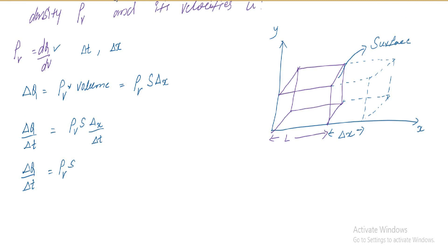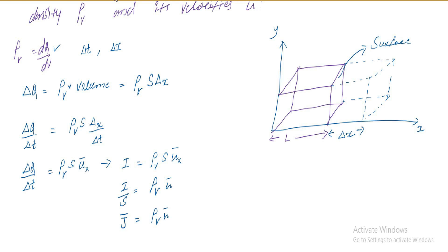Distance by time is velocity, so delta-q by delta-t equals rho-v times S times ux. Delta-q by delta-t is nothing but I, so I equals rho-v times S times ux. I by S is current density J, so J equals rho-v into u. This is the relation between current density J, volume charge density rho-v, and velocity u.